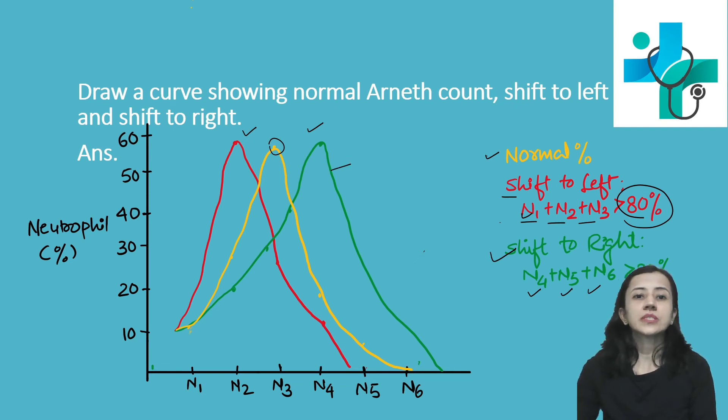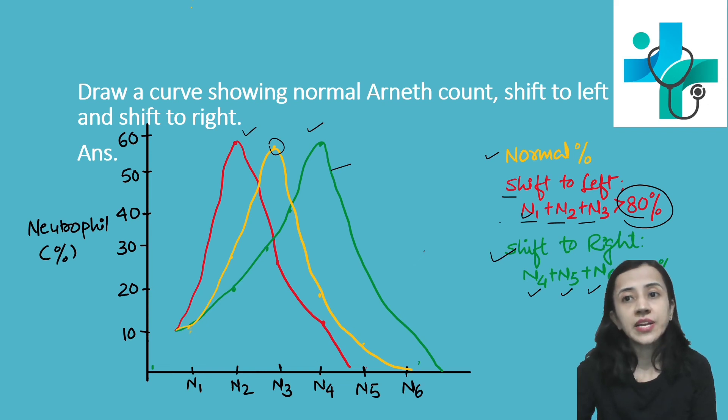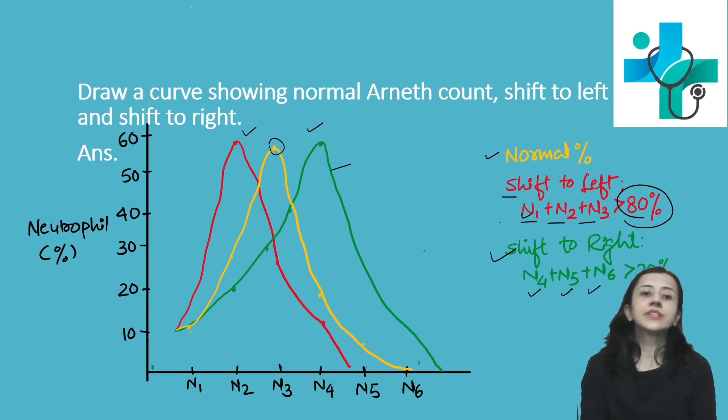So this is the curve showing normal Arneth count as well as shift to right and shift to left.